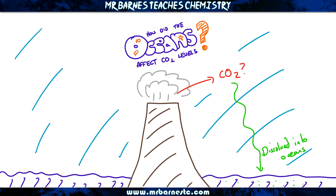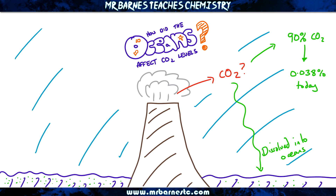What this has meant is the amount of carbon dioxide has gone down from around 90% when the Earth first formed, to around 0.038%. Although it's not actually just dissolving in the oceans that has done that.